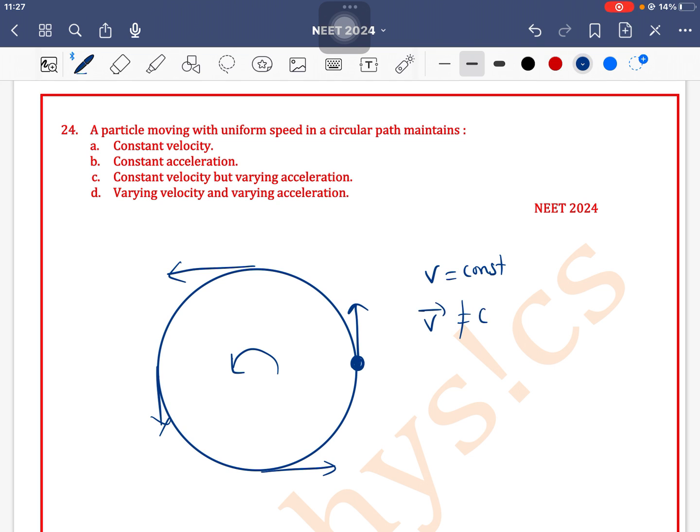So velocity is not constant because velocity contains direction. Constant velocity is incorrect. Velocity is varying. And with constant acceleration, we know that whenever a particle performs circular motion and moves with uniform velocity...